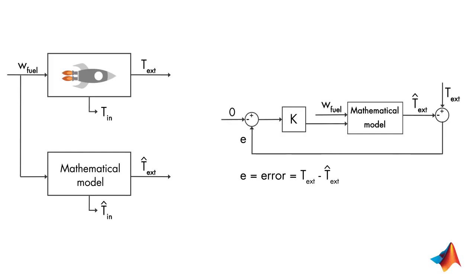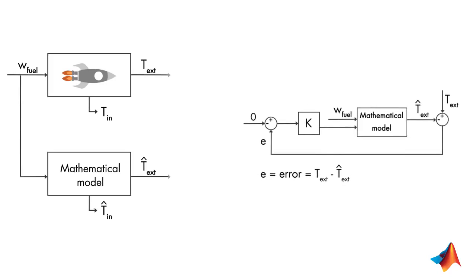If we now update our diagram on the left-hand side based on what we've discussed here, it will look like this. This part represents the state observer. By closing the loop with a controller K around the observer, we try to eliminate the error between the estimated and measured external temperature such that the estimated internal temperature is driven to its true value.